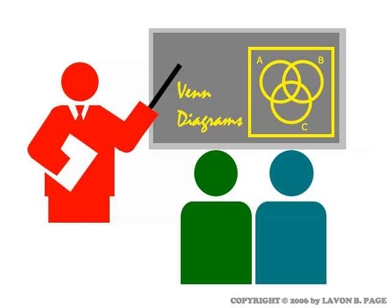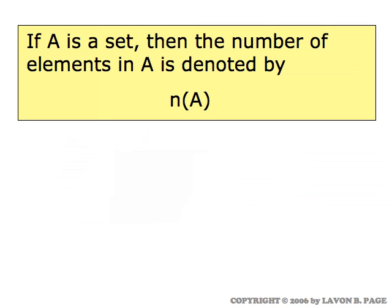This video illustrates the use of Venn diagrams for certain kinds of counting situations. First, a bit of notation. For any set — let's say capital A — when we want to designate the number of elements in the set, a shorthand way of doing that is to use functional notation N of A. Think of N of A for any set A as just representing the number of elements that belong to that set.